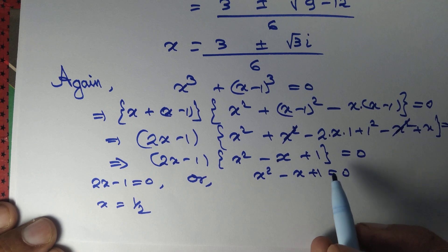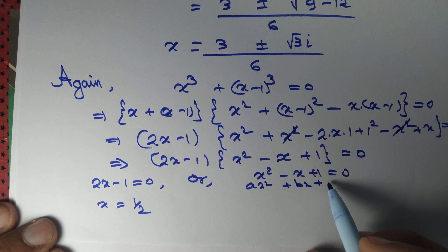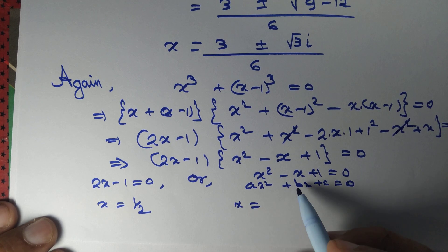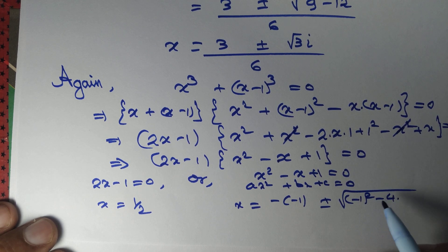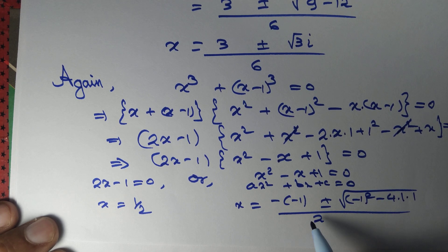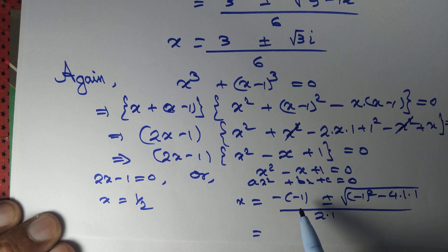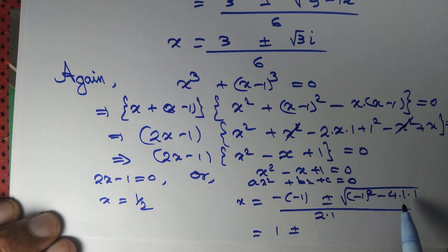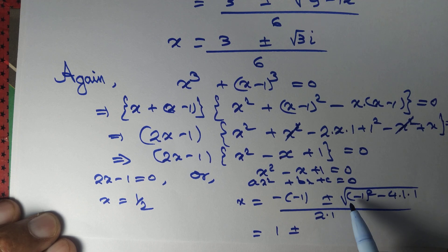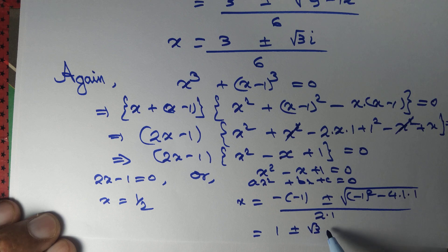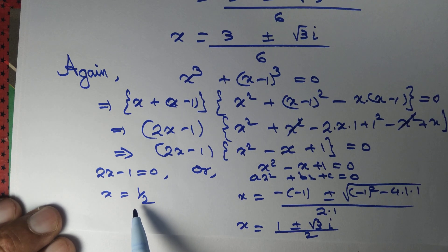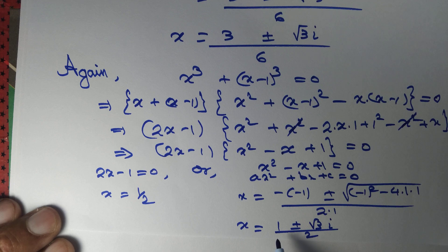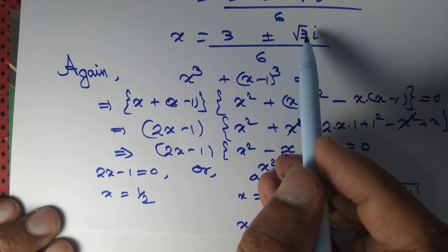What about x squared minus x plus 1 equal to 0? This is once again a quadratic equation. Roots are given by x equal to minus b, so minus of minus 1, plus minus root over b squared — minus 1 whole thing squared — minus 4 into 1 into 1, divided by 2 into 1. That gives 1 plus minus root over 1 minus 4, which is minus 3. The square root of minus 3 is root 3 times i, divided by 2. So you see that you get only one real solution x equal to half. You get four complex solutions: x equal to 1 plus minus root 3 i divided by 2, and x equal to 3 plus minus root 3 i divided by 6.